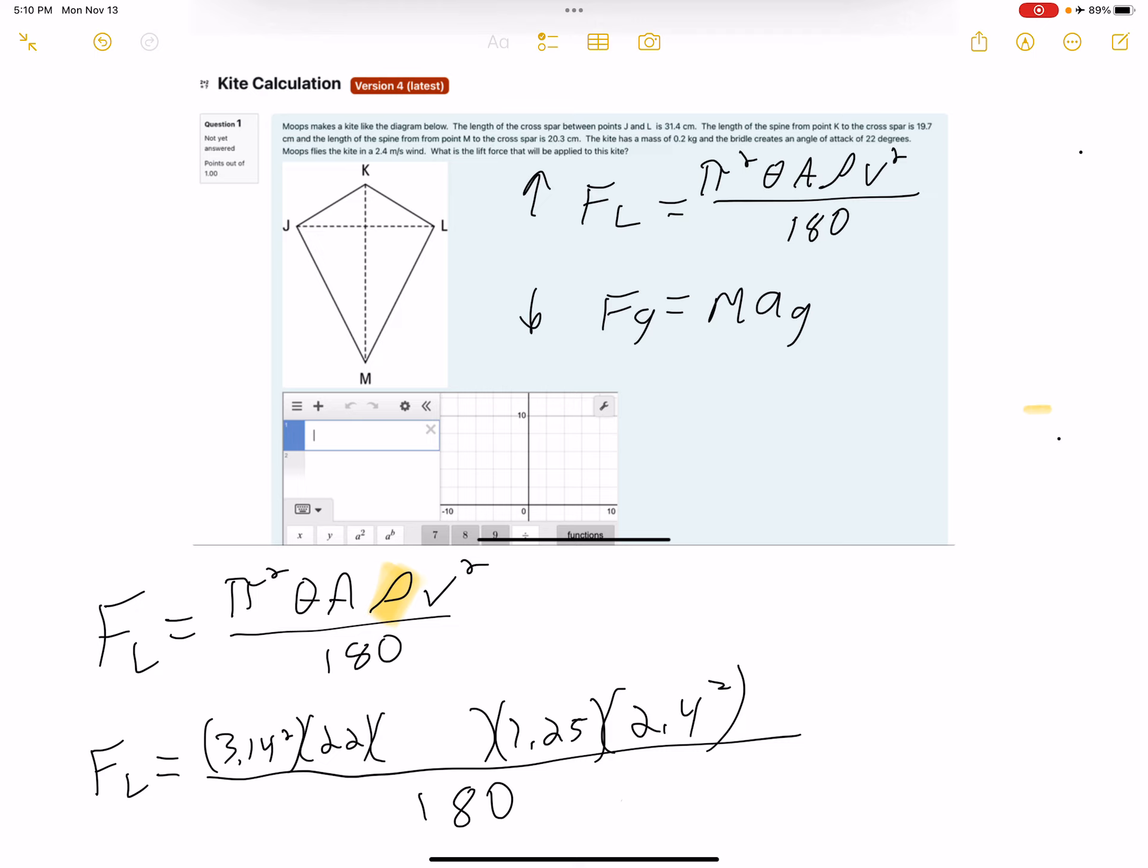It says the length of the crossbar between points J and L is 31.4 centimeters. I'm reading that right there. So that means the distance between here and here is 31.4.